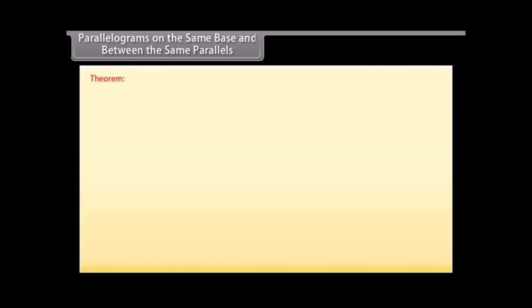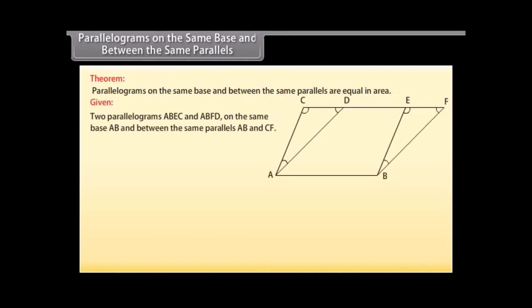Theorem: Parallelograms on the same base and between the same parallels are equal in area. Let us prove this theorem. Two parallelograms ABEC and ABFD on the same base AB and between the same parallels AB and CF are given. We need to prove that area of ABEC is equal to area of ABFD.